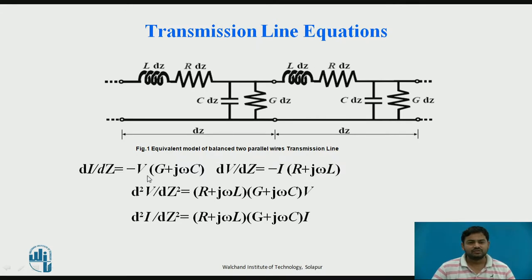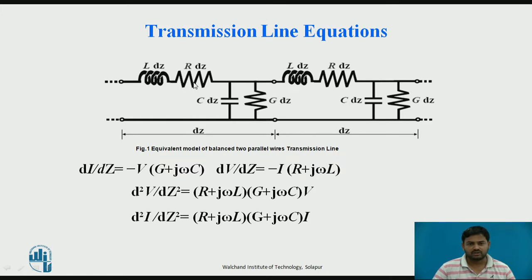In the last session, we derived that the rate of change of current with respect to space — since the line is traveling in the z direction — the rate of change of dI with respect to dz is given by minus V times (R + jωL), and the rate of change of current with respect to position is given by voltage multiplied by (G + jωC). The change in voltage is due to inductance and resistance, and the change in current is due to capacitance and conductance.